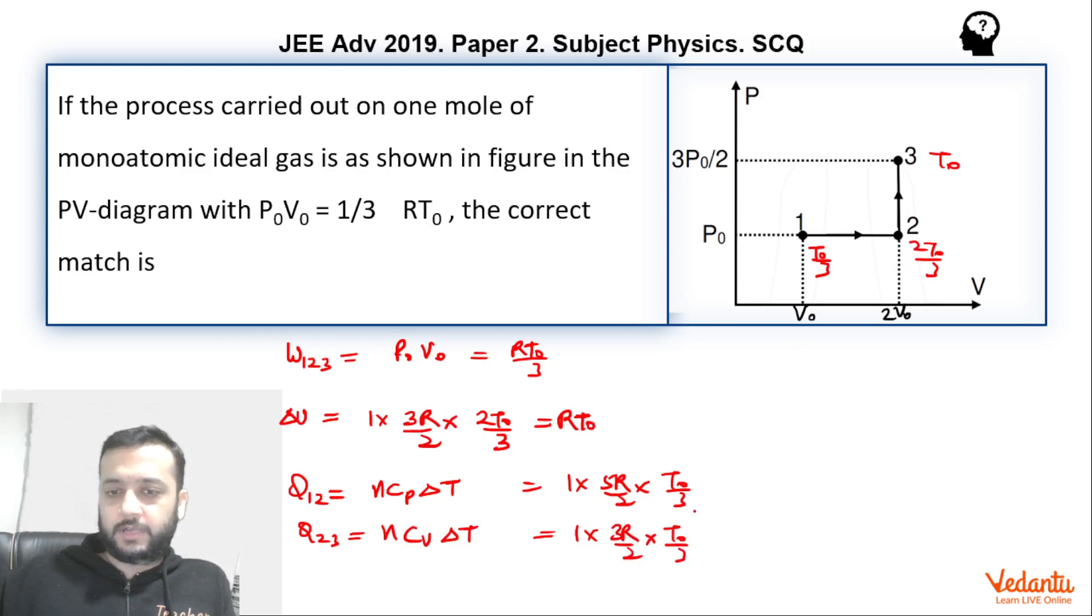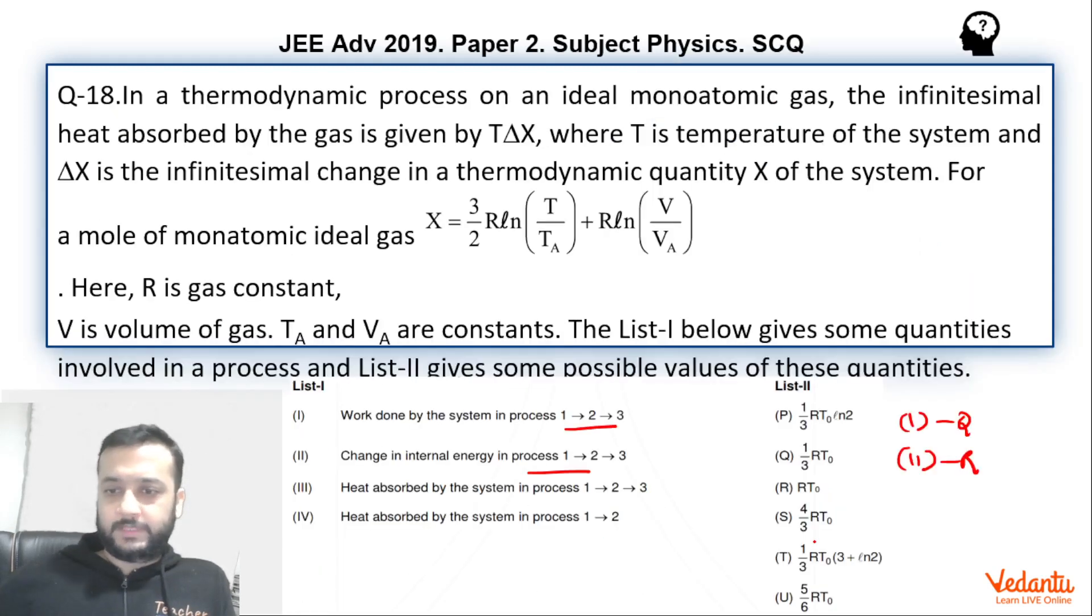And delta T from here to here is T0 by 3. So if you add these two quantities, what are we getting? T0 by 3 will be common. 5R plus 3R will be 8R by 2, 4R. So this total will become 4RT0 by 3. So basically we can say that third matches with S.